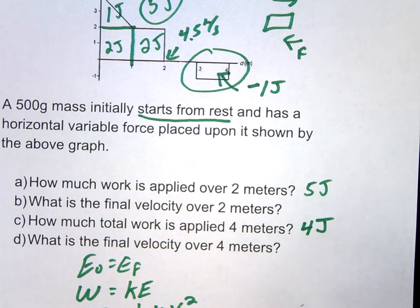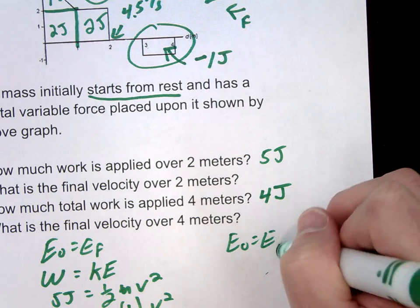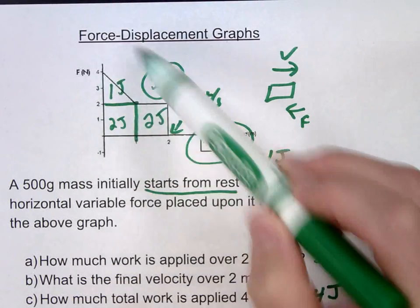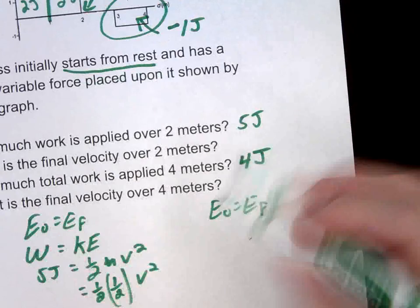So now if we're looking at the final velocity over 4 meters, again, we could do our same thing. We'll say E initial equals E final. And again, if we start way back at the beginning, we had no energy to start with.